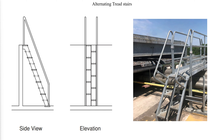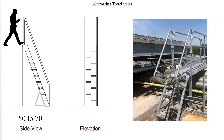In alternating tread stairs, the treads are alternately mounted on the left and right side of a center stringer. Because of this tread construction and the use of handrails on each side, these stairs permit safe descent facing outward from the stair. The pitch angles used are typically in the range of 50 to 70 degrees, much steeper than typical stairways used for means of egress. This type of stair is not acceptable as a path used for means of egress, except for certain special situations.